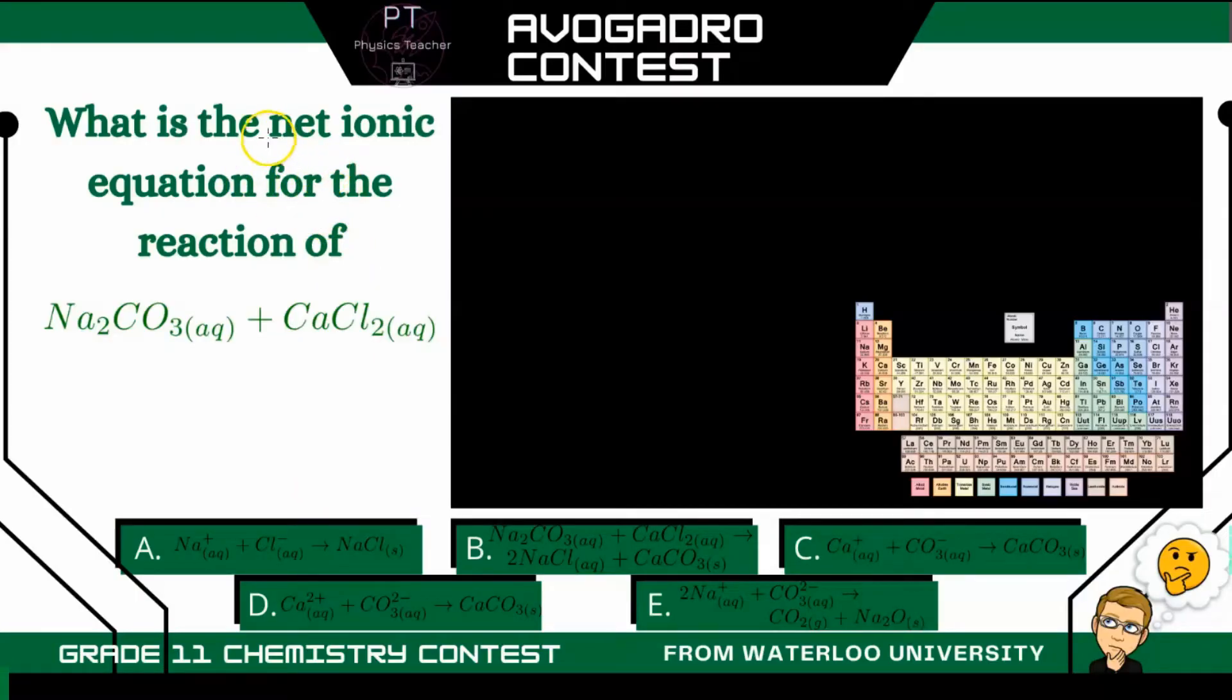So this question asks for the net ionic equation for the reaction between sodium carbonate and calcium chloride. First, step one. We're going to do this in a three-step process. The first step, we need to write this equation.